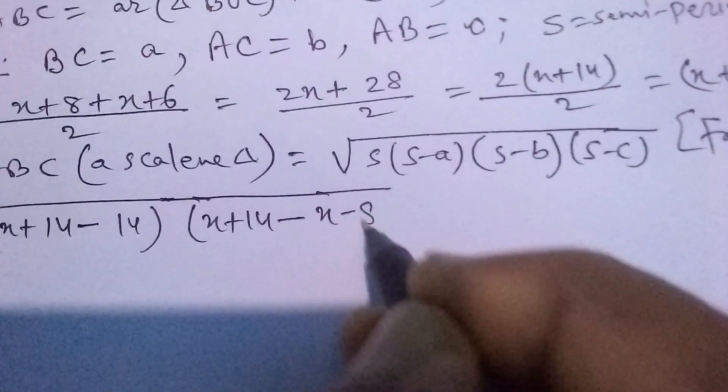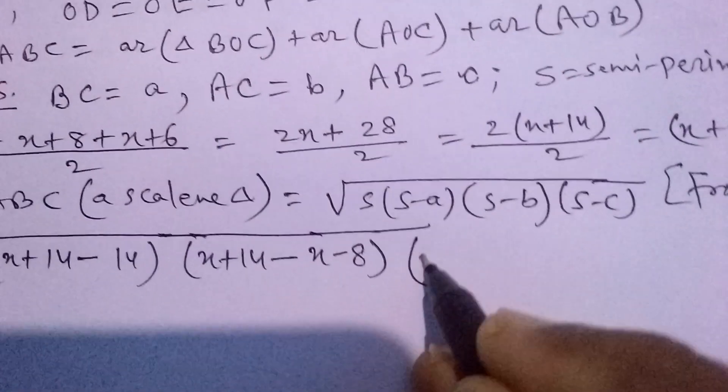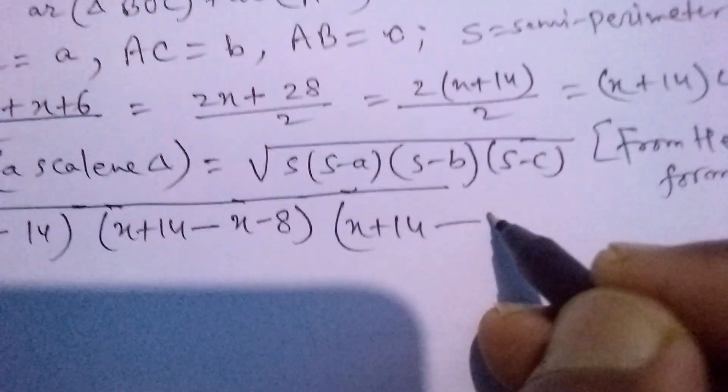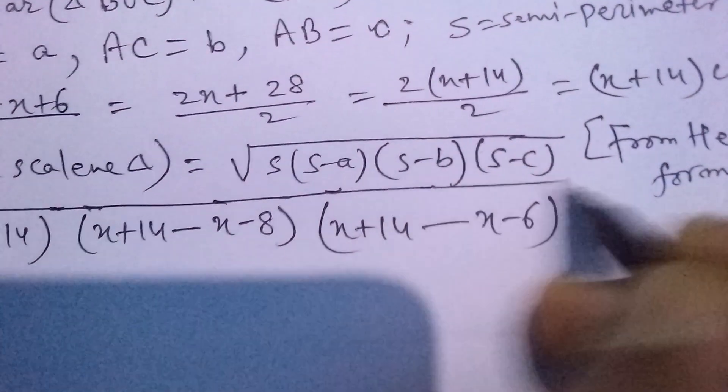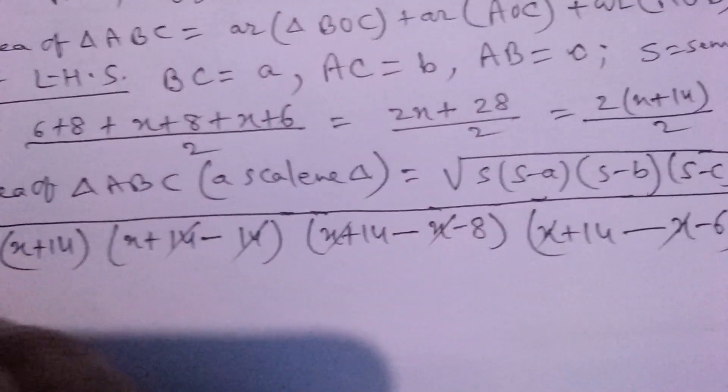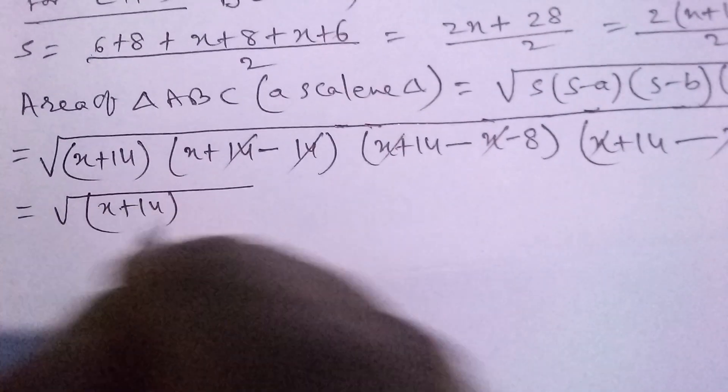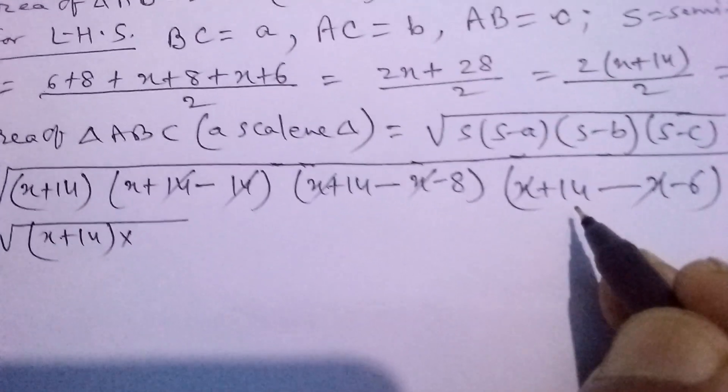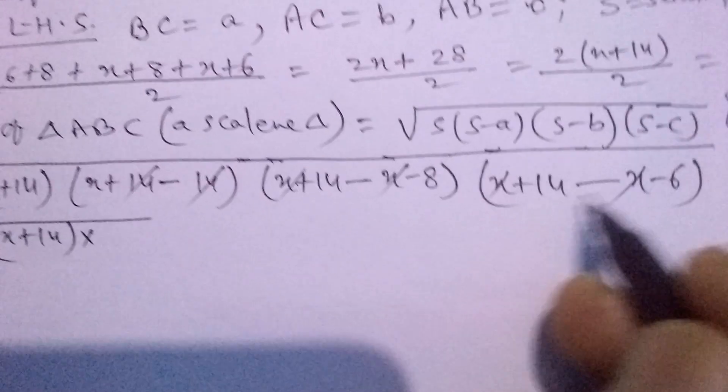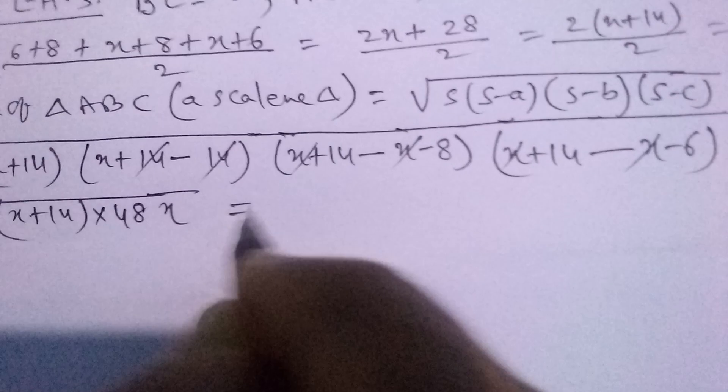This becomes (X+14-X-8) equals X-8, and (X+14-X-6) equals X-6. Simplifying, X cancels here, 14 cancels here, so we get X+14 times 6 times 8, which is 48, times X.